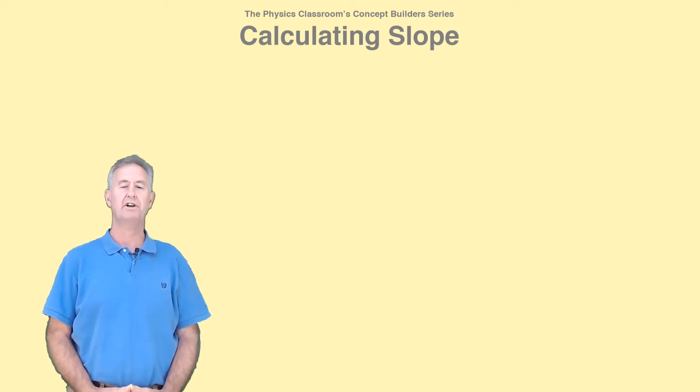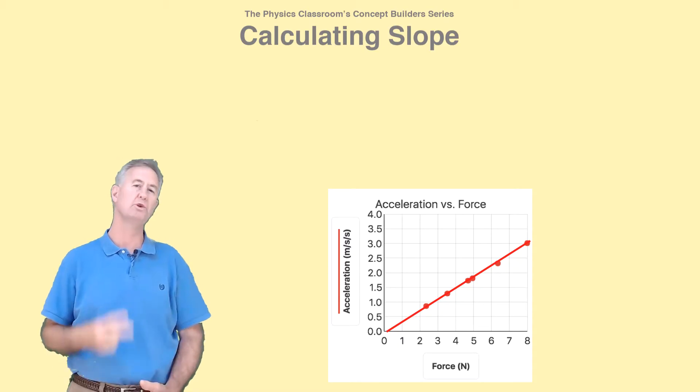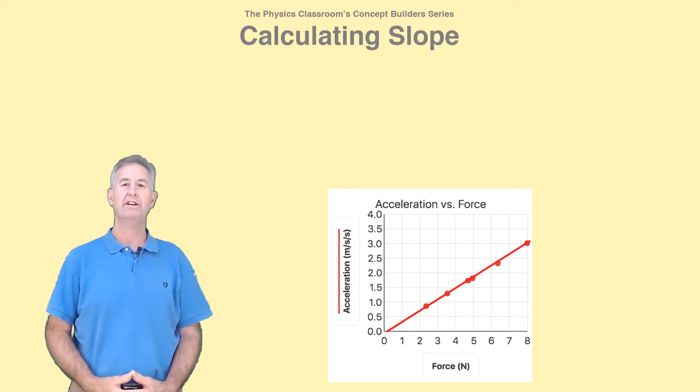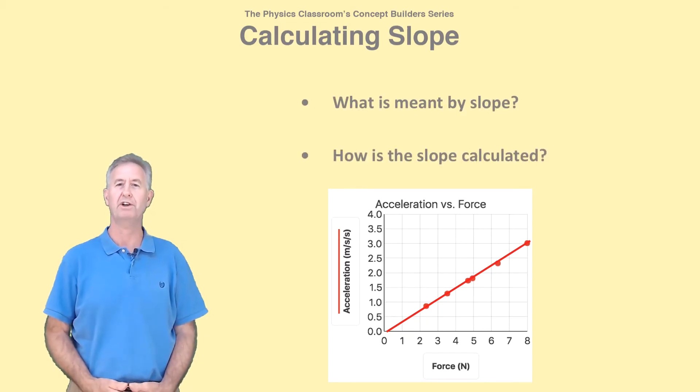In physics class, data is often collected and plotted in an effort to understand the relationship between the two quantities under study. The analysis often involves a slope calculation. But what is meant by slope, and how do you calculate the slope?